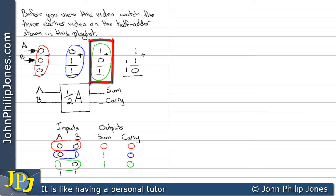Now this addition appears in the truth table as A is a 1 and B is a 0. And we can see that that gives us a sum of 1 and a carry of 0.